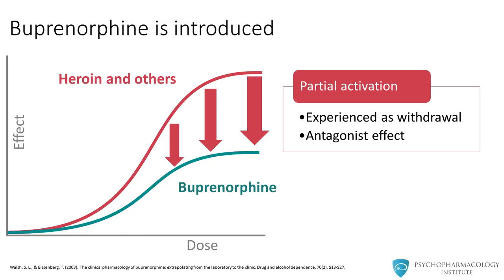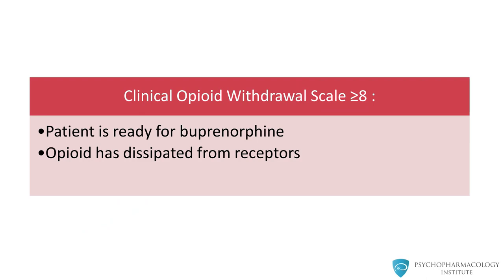In order to avoid this reaction, the heroin must first be sufficiently displaced from the receptors. The way we gauge this is by using a scale called the Clinical Opioid Withdrawal Scale, or COWS Scale. If the COWS score is 8 or greater, we consider the patient sufficiently ready for the introduction of buprenorphine, meaning sufficient amounts of heroin or other opioids have dissipated from the receptors, so introduction of buprenorphine will not cause withdrawal effects — instead producing agonist effects. Therefore, it is critical for patients starting buprenorphine to first be in sufficient withdrawal from heroin, morphine, or oxycodone before buprenorphine is introduced. If not, the introduction of buprenorphine will cause even worse withdrawal.